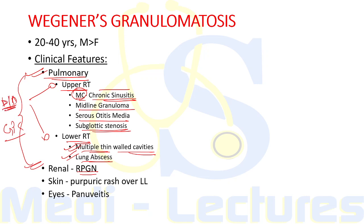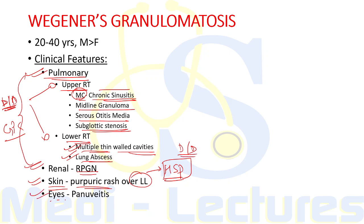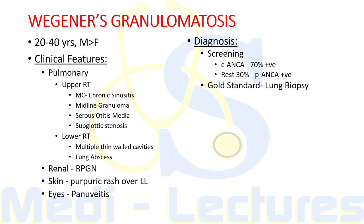Goodpasture Syndrome is also known as pulmonary-renal syndrome and is due to antibodies against collagen. Skin can also be involved in Wegener's — typically a purpuric rash over the lower limbs, similar to HSP, making it a differential diagnosis of HSP as well. Eye involvement is in the form of pan-uveitis. For diagnosis, C-ANCA is positive in 70 percent of cases; the remaining 30 percent may show P-ANCA positivity.